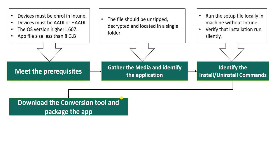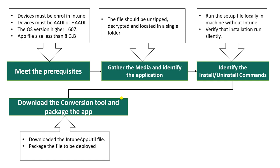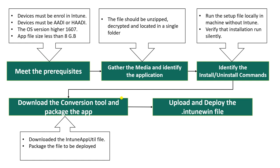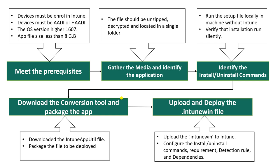Download the conversion tool and package the app. There is a tool from Microsoft — download the IntuneAppUtil — which you can easily get from the Microsoft site. Use it to convert your application into a .intunewin file and package the file to be deployed. Then upload and deploy the .intunewin file to Intune, and configure the install and uninstall commands, requirement, detection rule, and dependencies.